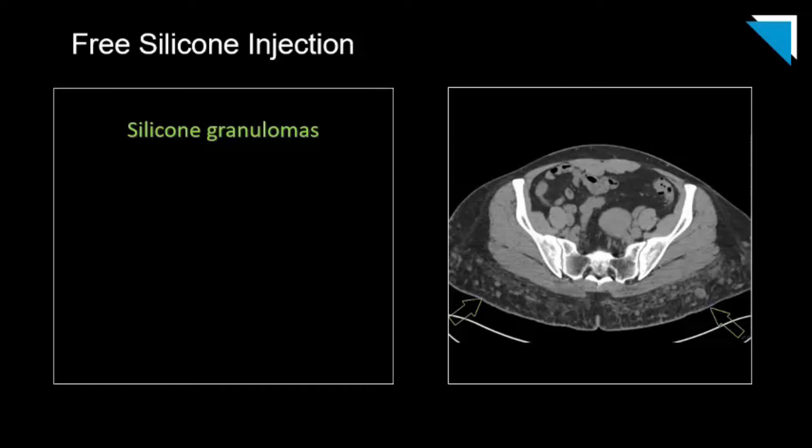Before being outlawed in Nevada in 1975, approximately 20,000 to 40,000 women were injected with non-medical grade silicone in the United States, which was usually adulterated with peanut oil, olive oil, or cobra venom in an attempt to limit silicone migration.